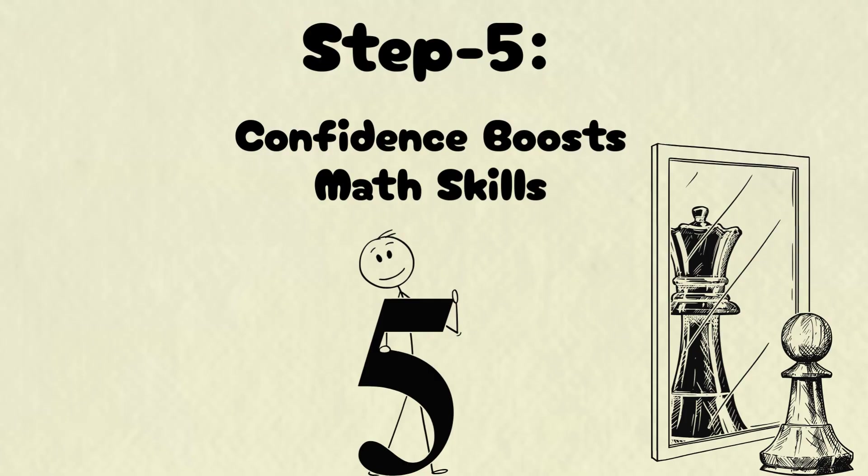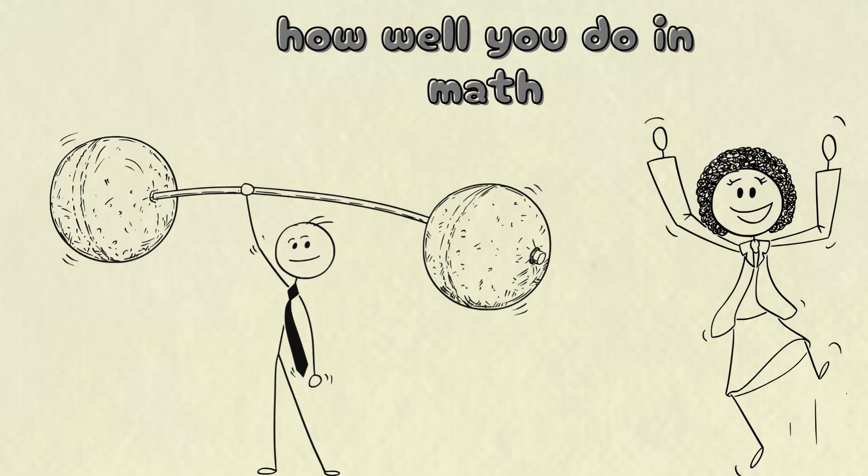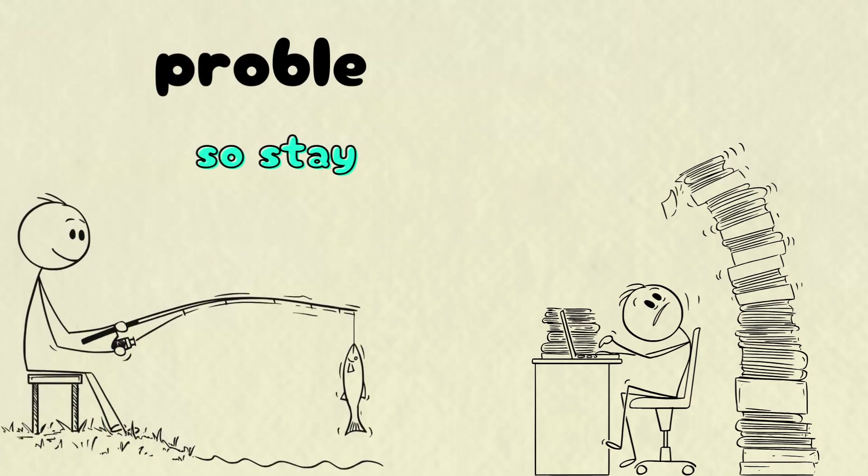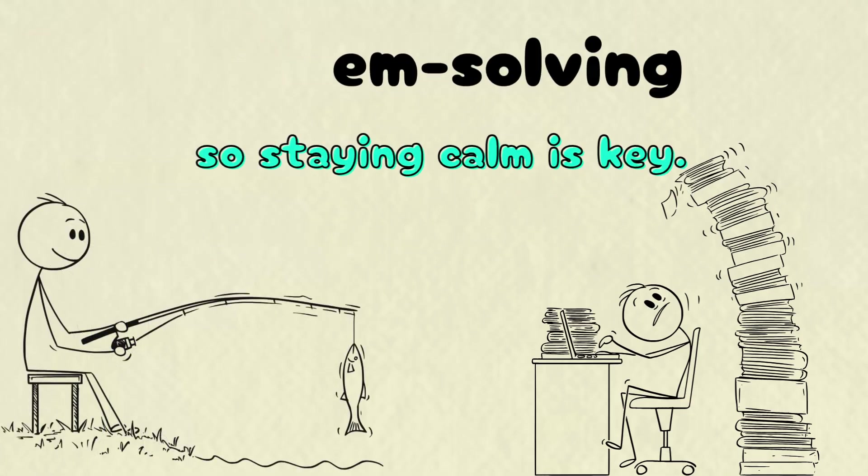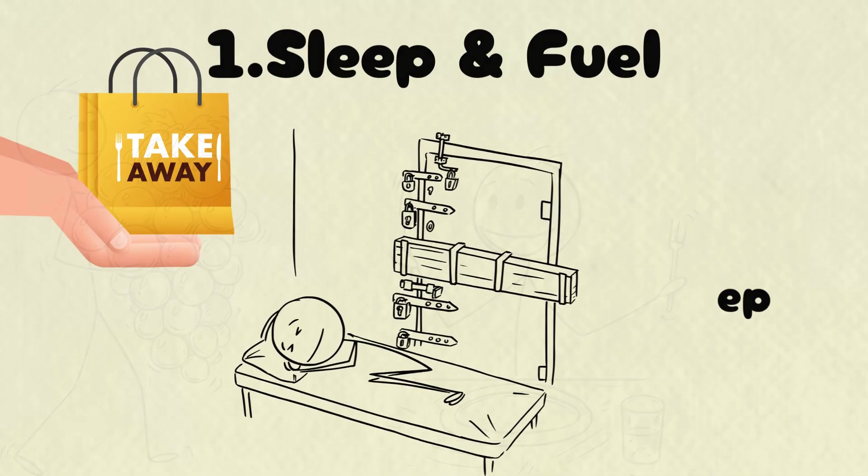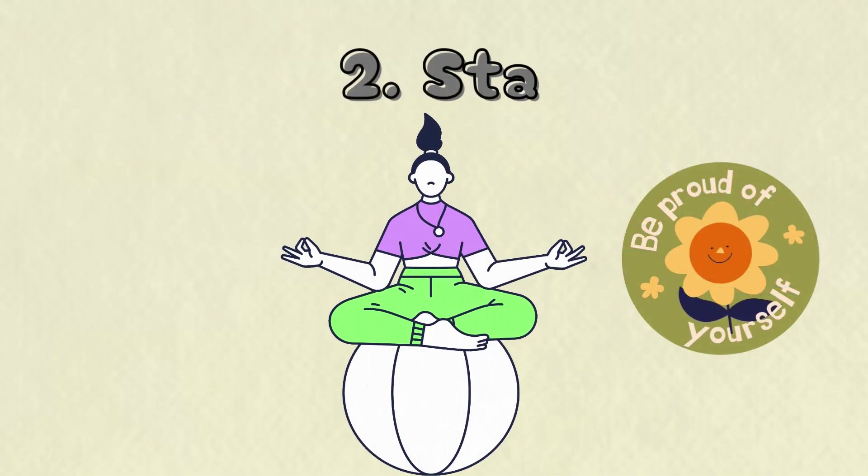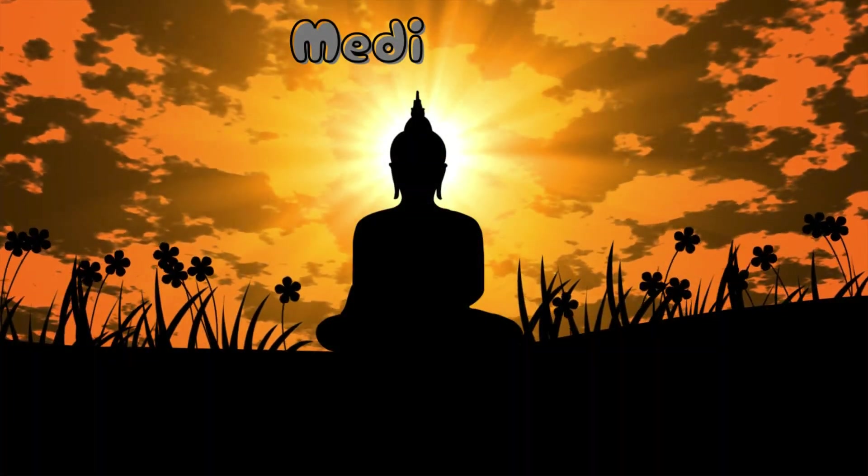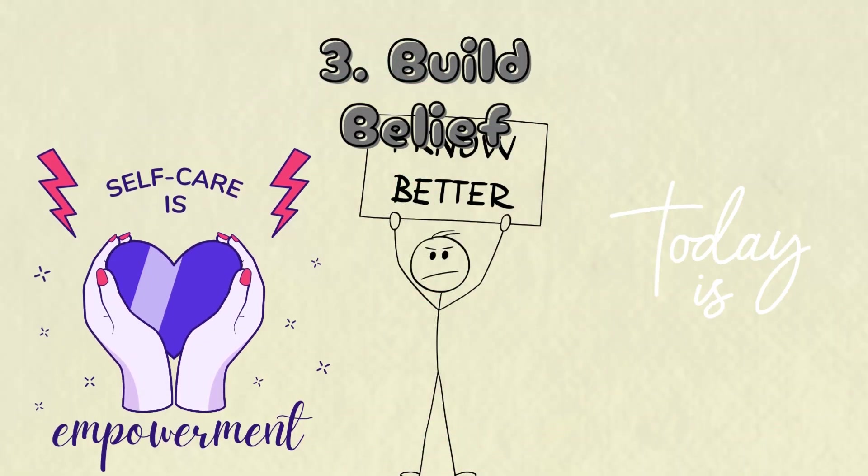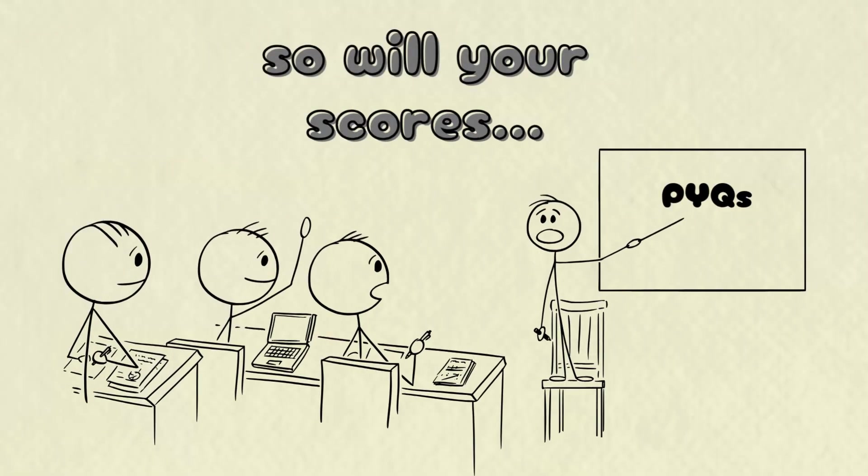Step 6. Confidence boosts math skills. Confidence plays a huge role in how well you do in math. When you're stressed or anxious, your brain struggles with complex tasks like problem solving. So staying calm is key. Sleep and fuel. Get at least 8 hours of sleep and eat well before the test. Less than 7 hours? Not worth it. Stay calm. Use techniques like meditation to manage nerves and get in the zone. Build belief. As you improve and solve tougher problems, your confidence will grow naturally and so will your scores.